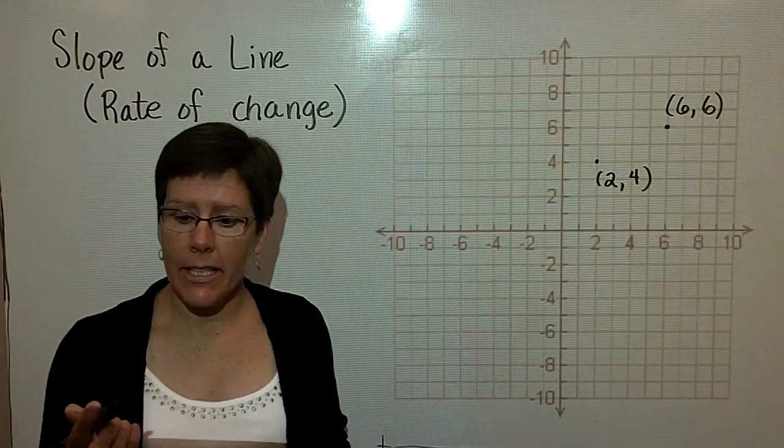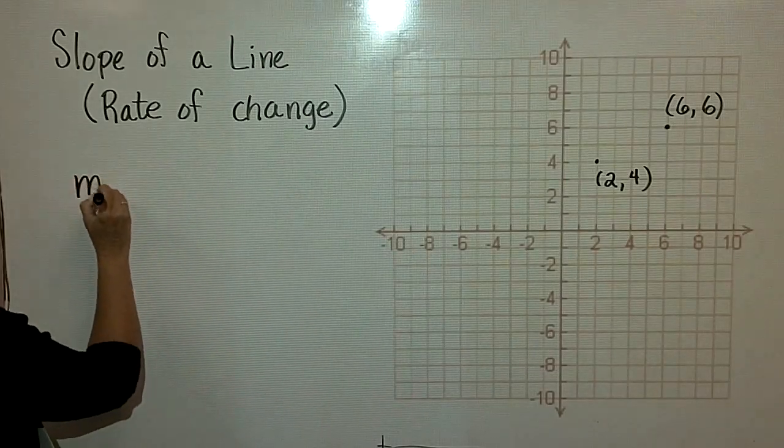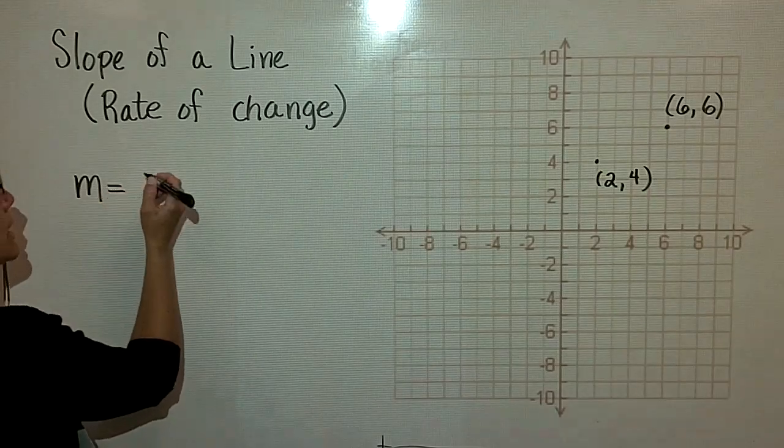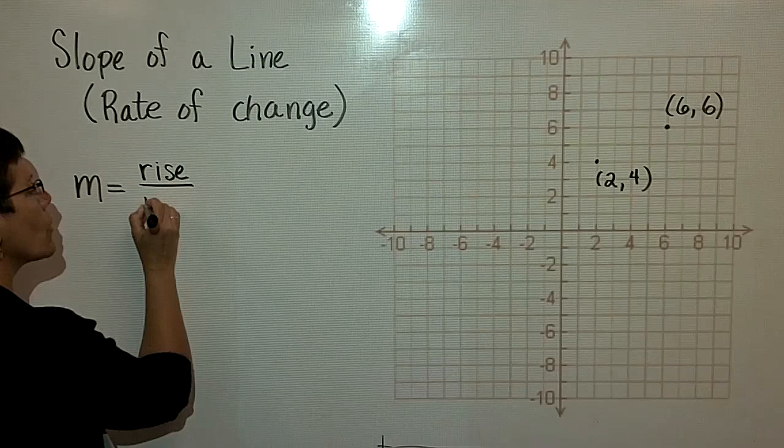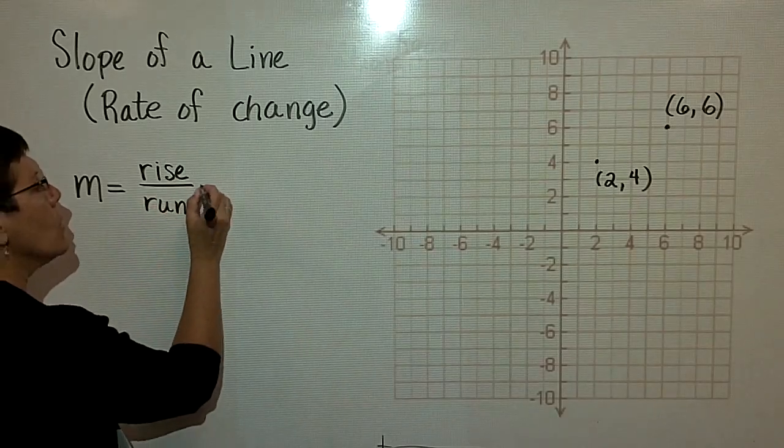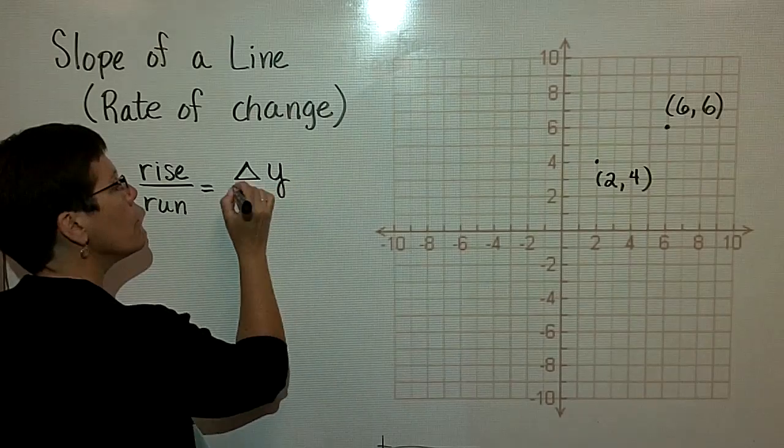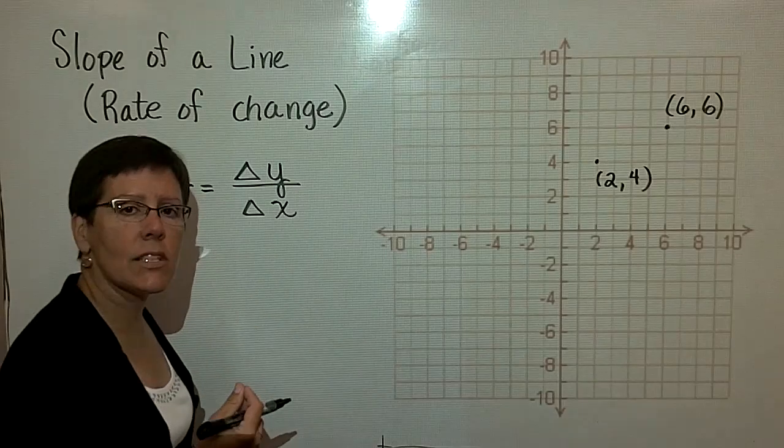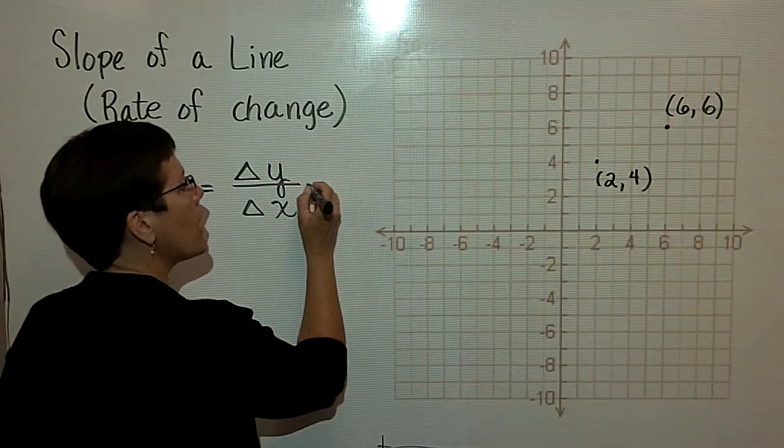I'd like to define the idea of slope. First of all, we define slope by the letter M, and it is defined as the rise over the run of a line, or many people will say the change in Y over the change in X. That's a Greek symbol called delta and it represents the change in Y over the change in X.